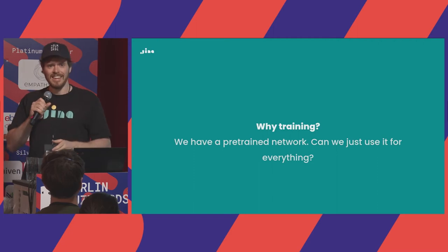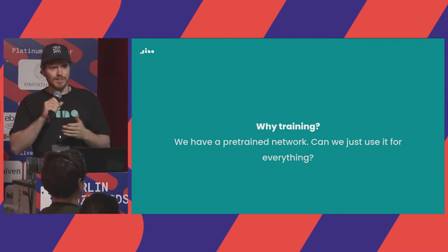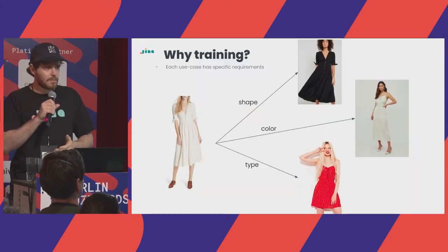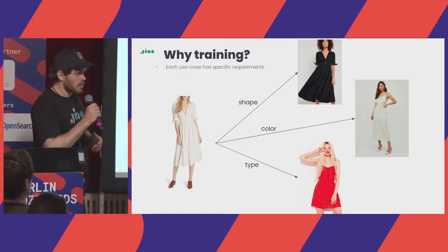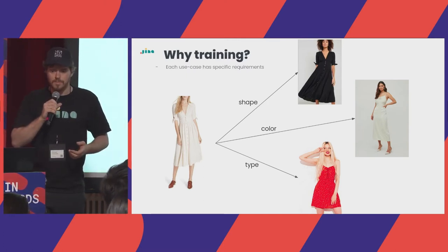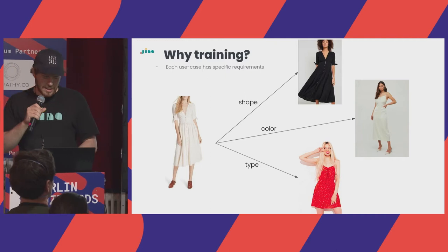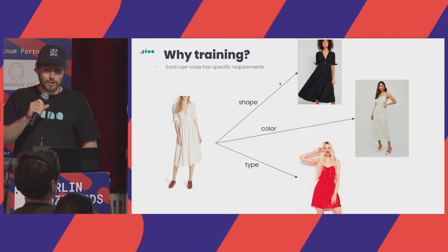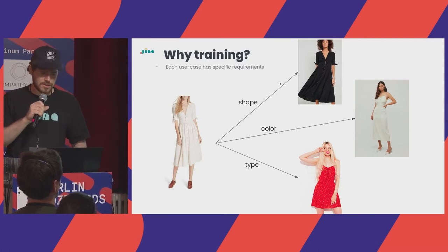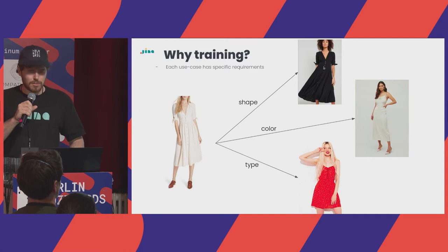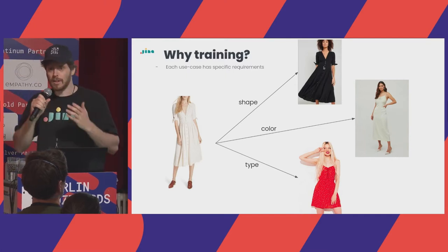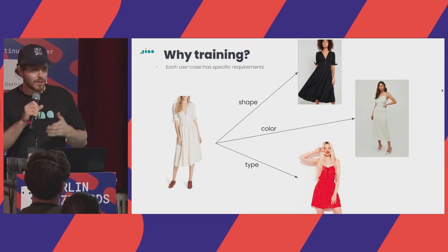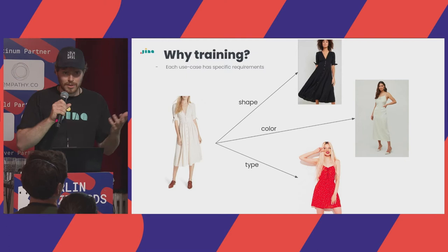Is that it — once we have this, are we happy and can work on all use cases? No, because there are very specific requirements for different use cases. In one example, based on an image, the perfect match might be something where the shape of clothing matches — same shape but different color. For another use case, color matching might be relevant while shape is not, so we'd need to train a different network.